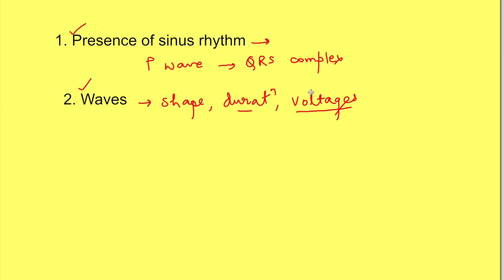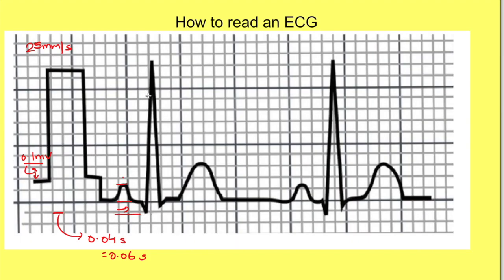To calculate the voltage of the QRS complex, take the most positive wave — in this case the R wave — and count the number of squares from the baseline. For example, 12 squares gives 1.2 millivolt. Then take the most negative wave — here Q wave is more negative, say minus 0.1 millivolt. Take the algebraic sum: the voltage of the QRS complex will be 1.1 millivolt.